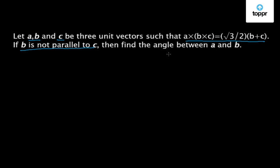So, let us try to solve this problem. Now, it is given that A cross B cross C is equal to root 3 upon 2 times B plus C. On the left hand side, we have the vector triple product.